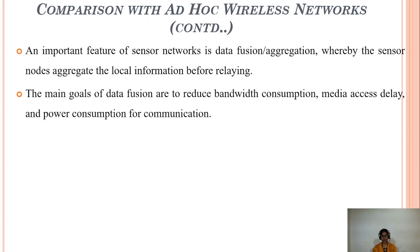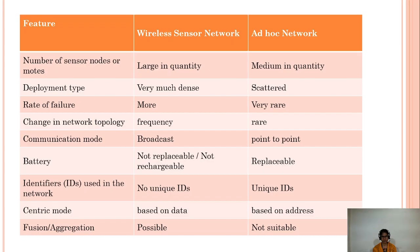An important feature of sensor networks is data fusion and aggregation, whereby sensor nodes aggregate local information before relaying. The main goal of fusion is to reduce bandwidth consumption, media access delay, and power consumption for communications.